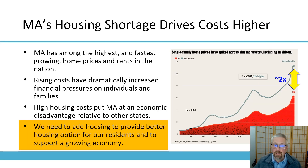If you look at the charts over here on the right, since 1980, housing prices in Massachusetts have grown at almost twice the rate as they have in the rest of the country. We have among the highest and fastest growing home prices in the country. Those rising costs have put a lot of financial pressures on individuals and families, and have put us at an economic disadvantage relative to other states. We are losing business to states where housing costs are lower.